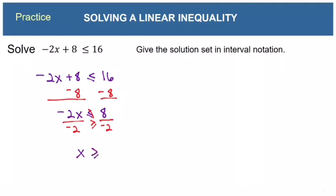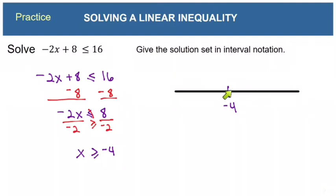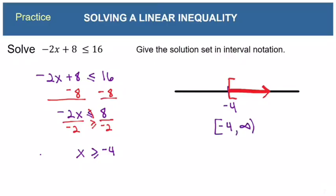So now we have x is greater than or equal to negative 4. This is an interval of numbers, so we graph it on a number line. Here's negative 4; the greater-than numbers are to the right. Because of the or-equal-to, we put a bracket on our shading. The interval goes from negative 4 to infinity.